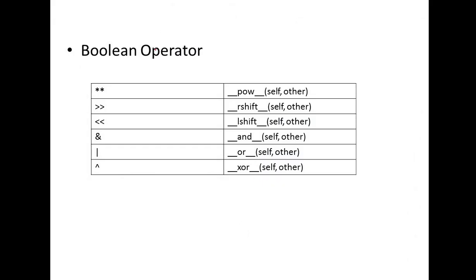Then we have boolean and bitwise operators. The double asterisk symbol in Python represents A to the power B, represented as self, other. I will show you a demo program at the end of this session so you can try the other operators. We also have right shift, represented as rshift with self and other, and left shift. The ampersand symbol represents AND, and the caret symbol represents XOR.